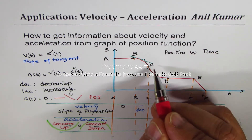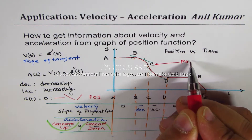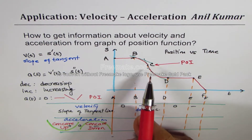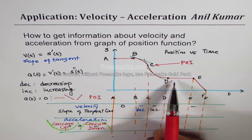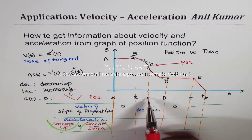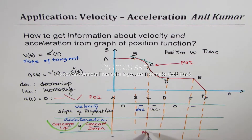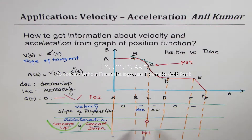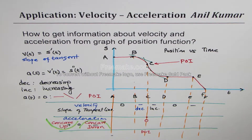Concavity changes at c, so at c we have a point of inflection. There is only one point of inflection here, which is at c — this is a critical point where acceleration is zero. It is not an interval; rather, temporarily the acceleration will be zero at that point.